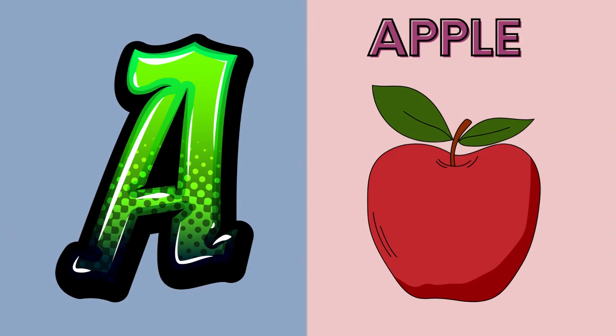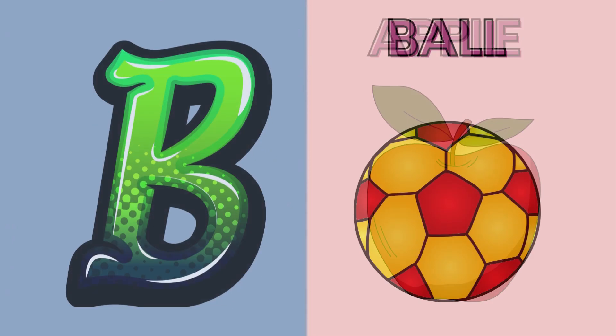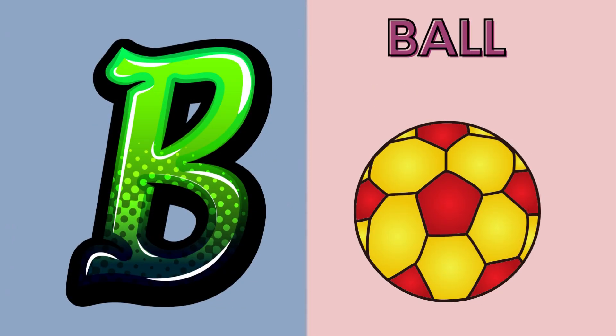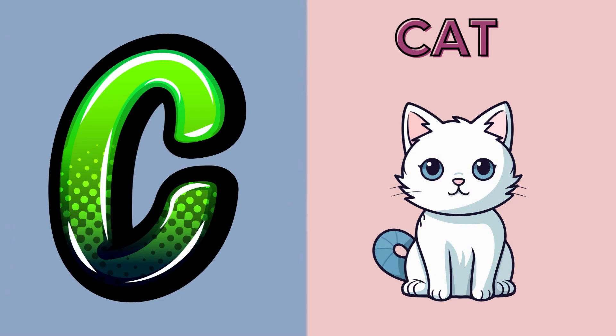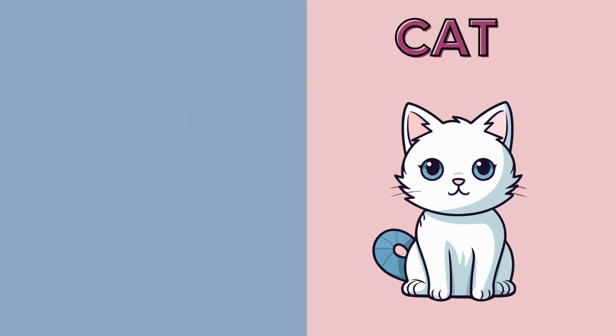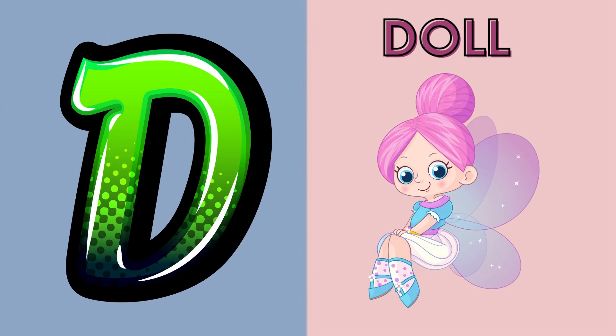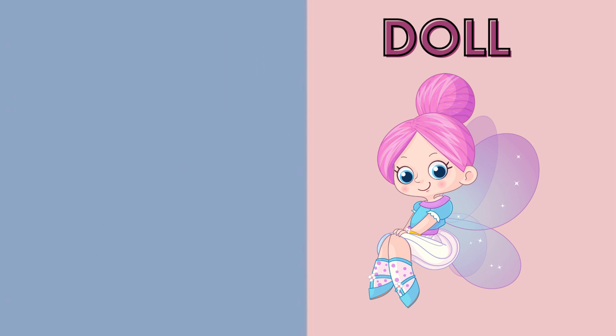A is for apple, a-a-apple. B is for ball, b-b-ball. Z is for cat, c-c-cat. D is for doll, d-d-doll.